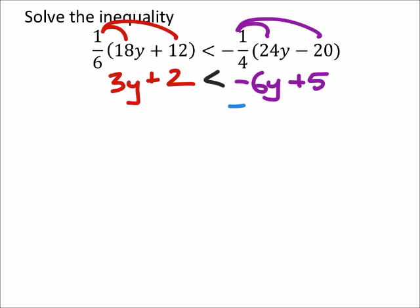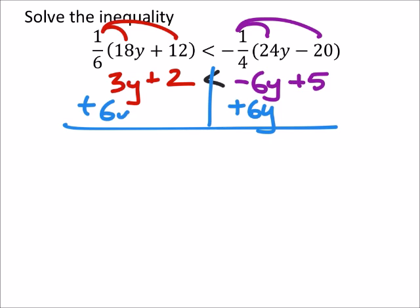So I need to get this negative 6y to the other side of the inequality by adding 6y to both sides. I also need to subtract 2 from both sides because this plus 2 is on the wrong side of the inequality as well.